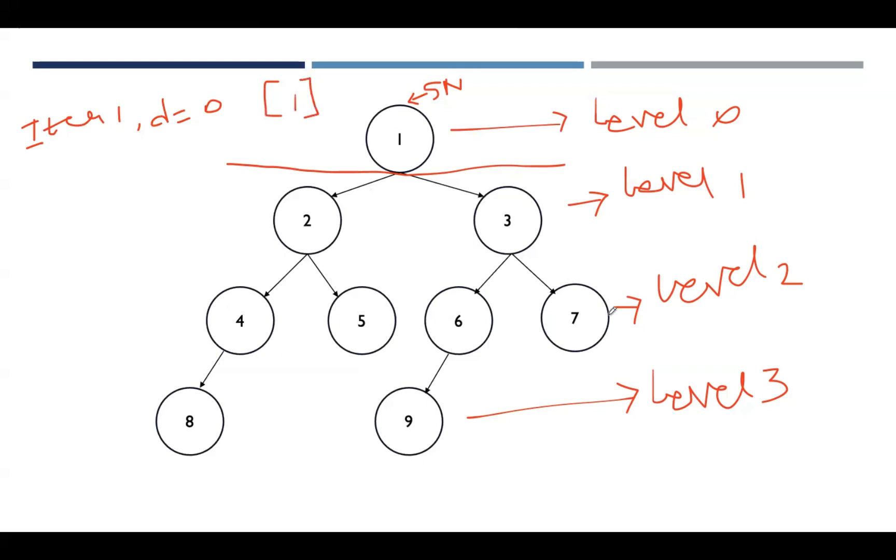But our goal node is 7. Assume that the goal node is 7. So now we need to repeat the process. We need to perform more number of iterations. Let us take iteration 2, where we incremented the depth by 1. So now depth is 0 plus 1, that is 1.